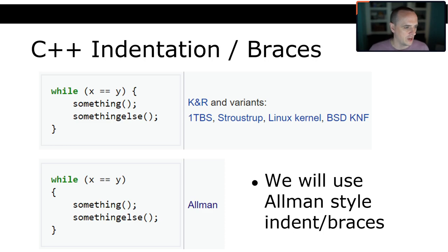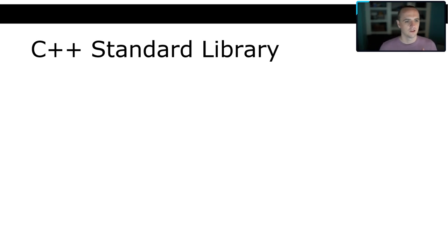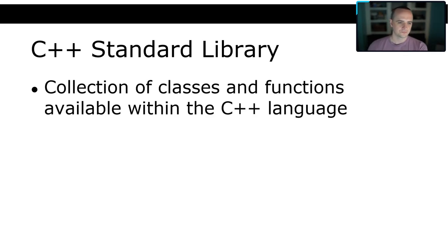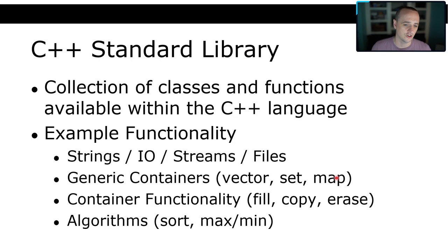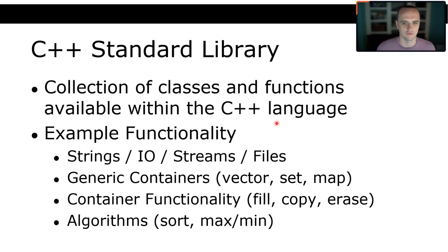Now, the C++ standard library. The Standard Template Library is a collection of classes and functions available within the C++ language. Some example functionality: strings, input/output streams, file I/O, generic containers like vectors, sets, and maps, container algorithms like fill, copy, erase, and sorting, minimum, maximum, and math functionality — all built in. To use the standard library, you use the '#include' preprocessor directive.